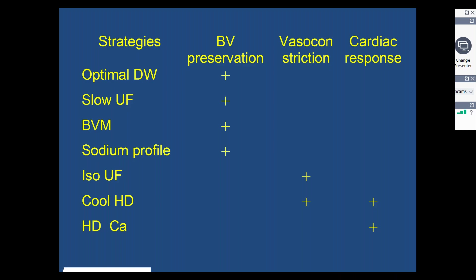This pathophysiology is taken into account when KDOQI recommends different strategies to remove fluid in an optimal and safe manner. Typical recommendations include slowing down the ultrafiltration rate, using a blood volume monitor, sodium profiling, isolated ultrafiltration, or cooling the dialysate temperature down. These mechanisms act by three predominant mechanisms: either by preserving blood volume, improving the constrictive power of the microcirculation, or improving the cardiac response. Some of these are utilized in clinical practice, but not all.